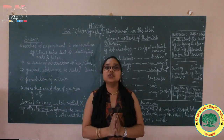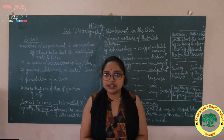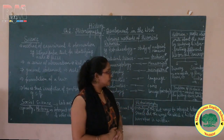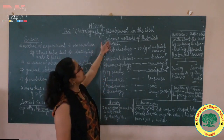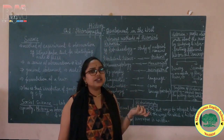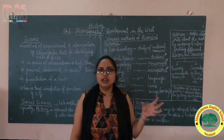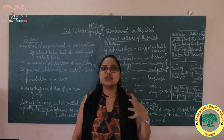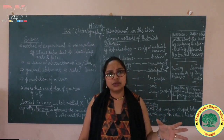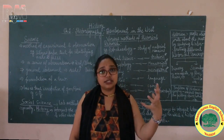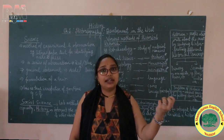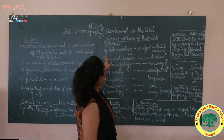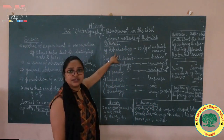Various methods of historical research exist. Historical research can't be done using just one method, unlike Science where you have a physics or chemistry lab. In History, there are various methods of historical research. For example, you can find out about history through archaeology.